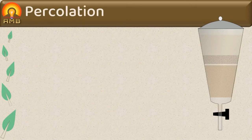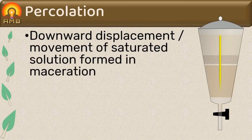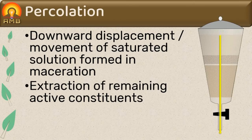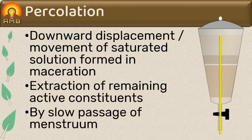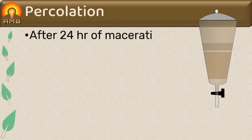The next step is percolation. Percolation involves downward displacement of the saturated solution formed during maceration and extraction of remaining active constituents by slow passage of menstruum through the column of drug. This begins after the 24 hours of maceration.